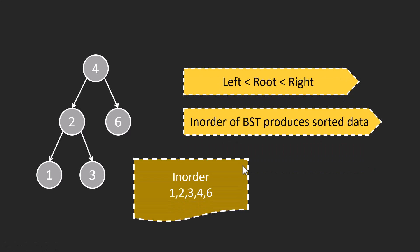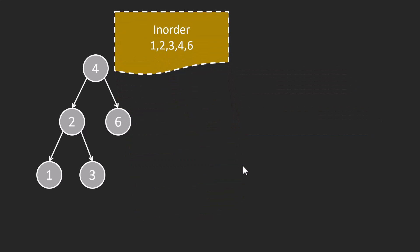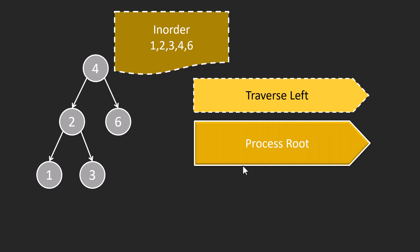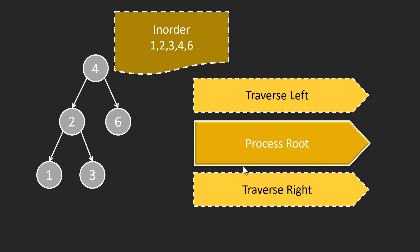For the in-order traversal, it's simple: first we traverse to the left, then we process the root, then we traverse to the right. The left and right traversals are recursive, and this is where we do the actual processing of the current node. Let's first understand how to find the in-order, and then we'll incorporate our code to find the minimum difference during that in-order traversal.